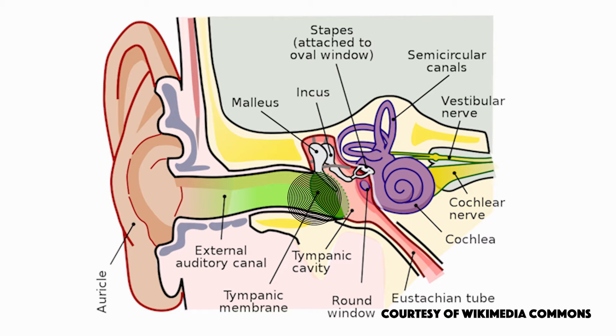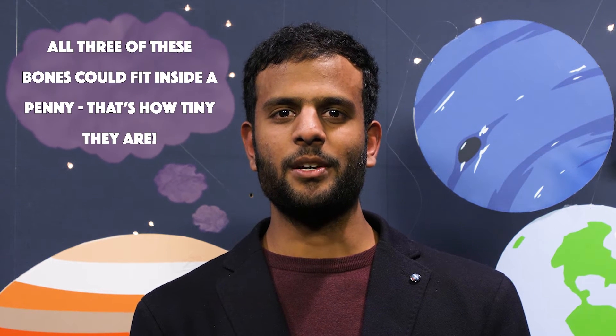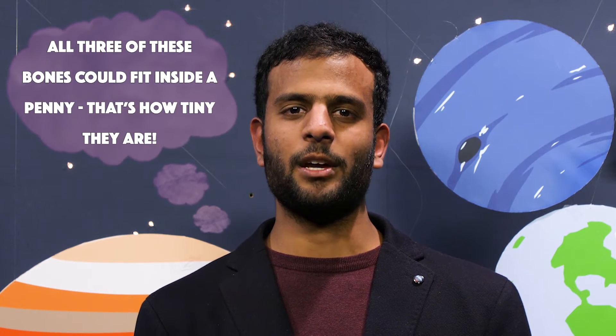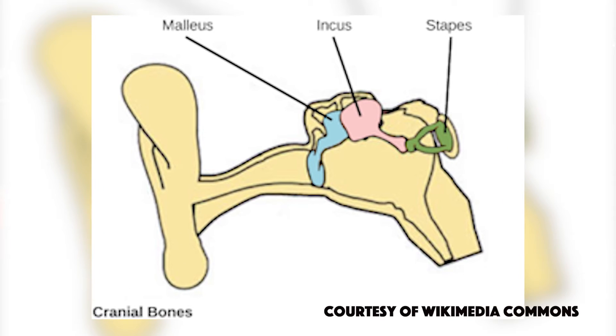Once the sound waves hit your eardrum, your eardrum transfers these vibrations to three minuscule bones located in the middle ear. These three bones are called the malleus, incus, and stapes, and they are essential in the process because they amplify the sound vibration. As you can see, the vibrations first hit the malleus, then the incus.